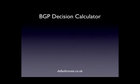So let's go straight into some decision calculator stuff. What are the factors that affect the way the BGP RIB is built to choose the best path? I've called these the big five — the first five in-order variables that Cisco's IOS uses to decide which is the best BGP path.